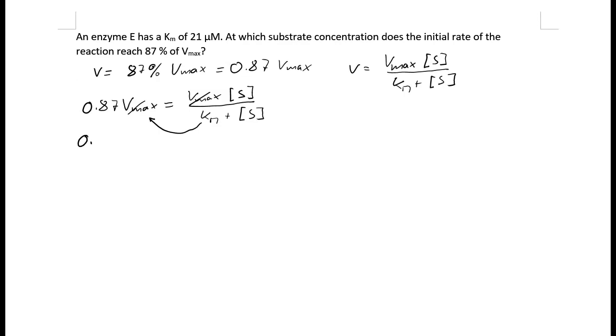To do so we bring this term in the denominator to the other side and we get 0.87 times Km plus S equals, what have we got left on the right hand side? We only have S left on the right hand side.